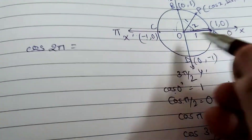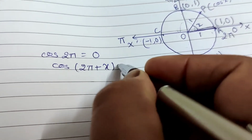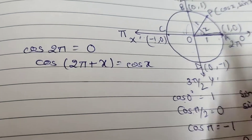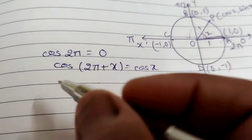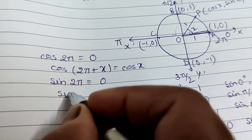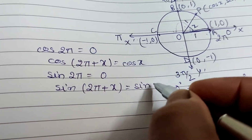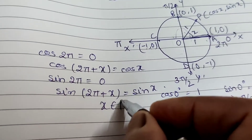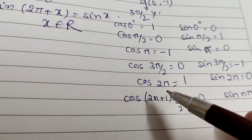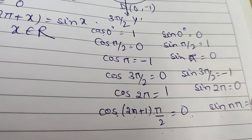Since cos(2π) = 1, we get the identity cos(2π + x) = cos x. Similarly, since sin(2π) = 0, we get sin(2π + x) = sin x, for all x belonging to real numbers. So the general formulas are: cos(2n+1)π/2 = 0 and sin(nπ) = 0.